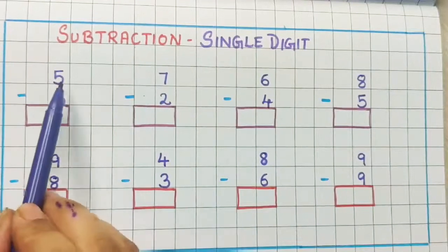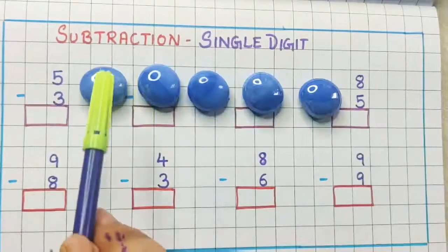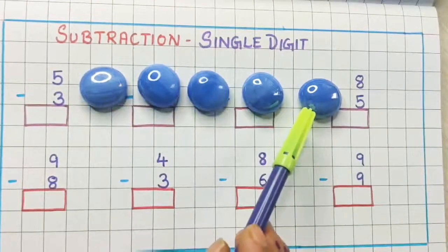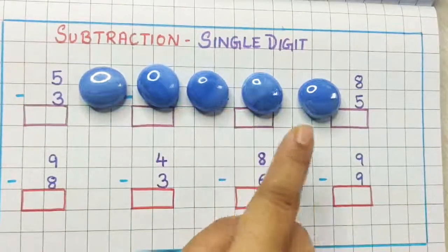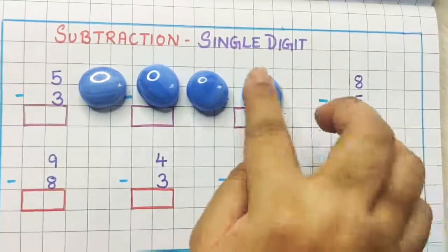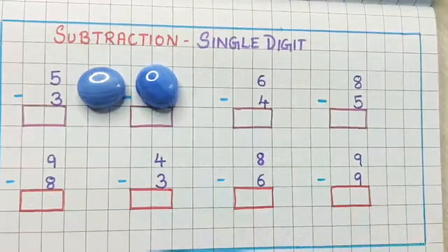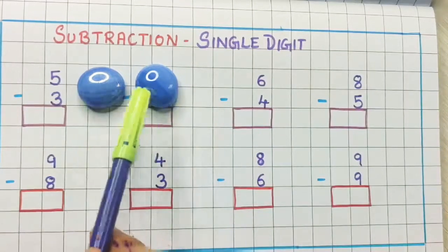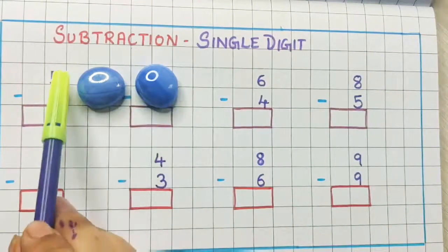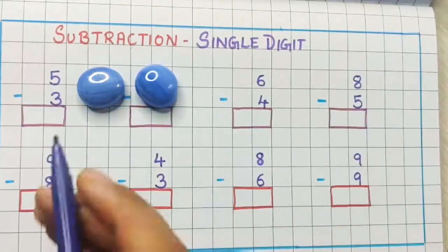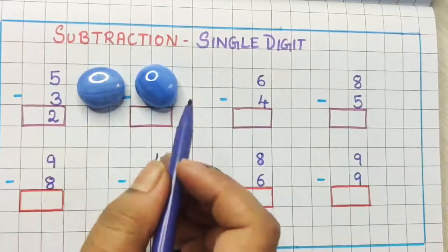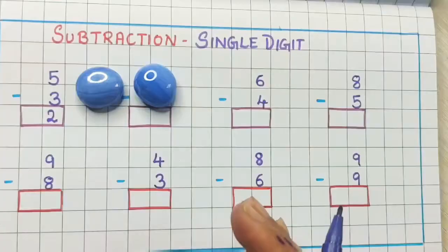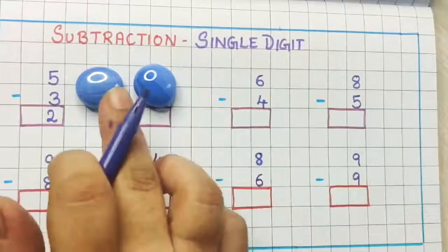See the first one: 5 minus 3. I have 5 stones with me — 1, 2, 3, 4 and 5. Now from these 5 stones if I am giving 3 stones to my friend, I am removing 1, 2 and 3. So how many are left with me? There are 2 left. So 5 minus 3 gives the answer 2. The number decreases — first there were 5, now there are only 2.